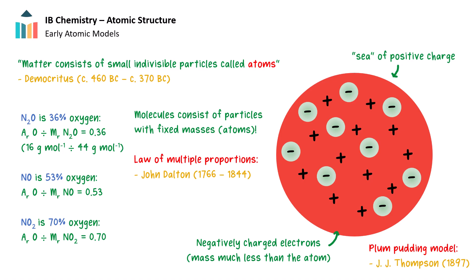For example, nitrous oxide N2O is 36% oxygen, nitric oxide NO is 53% oxygen, and nitrogen dioxide NO2 is 70% oxygen. Compositions between these are not possible. This rule, called the law of multiple proportions, is only possible if molecules consist of particles with fixed masses.